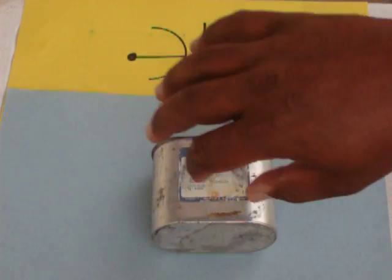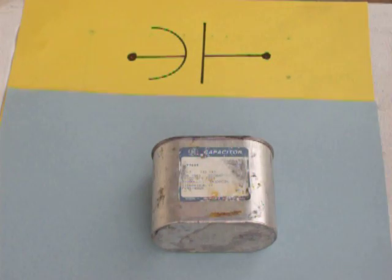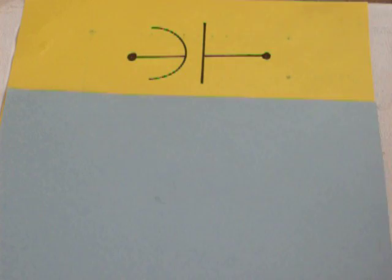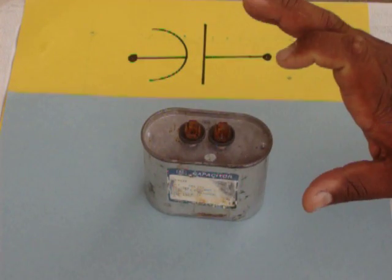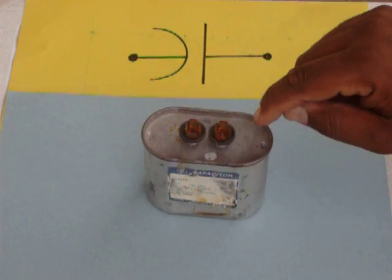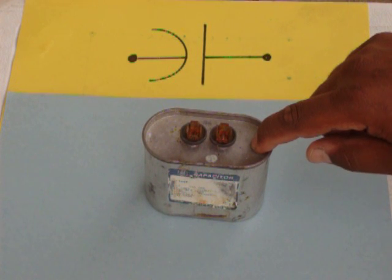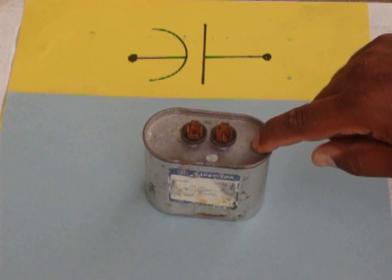This is an actual run capacitor out of an air conditioner. The concern first and foremost here is safety. Before you check a capacitor, you need to discharge it. A capacitor holds the charge. It needs to be properly discharged with a 20,000 ohm resistor.